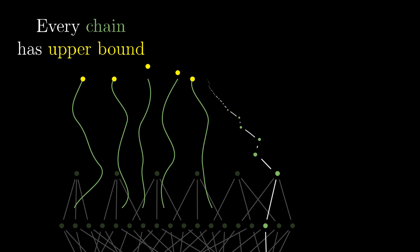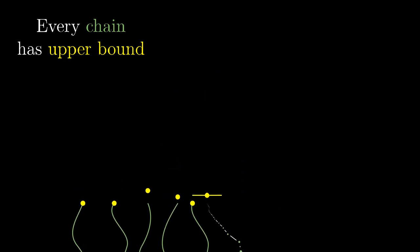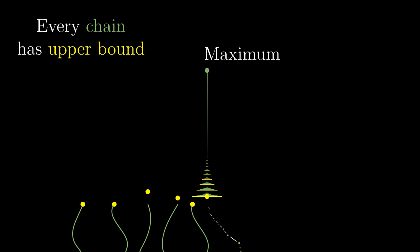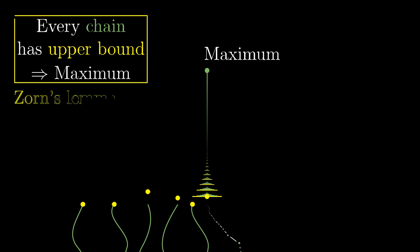Once this condition is satisfied, it is guaranteed that we can continue with a limit step and climb upwards by transfinite recursion on ordinal numbers. We cannot use all the ordinal numbers because they do not fit into a set, so we have to reach a maximal element. This statement — that whenever every chain has an upper bound there is a maximal element — is called Zorn's lemma.